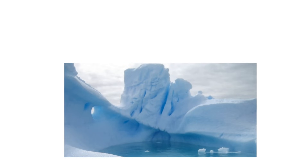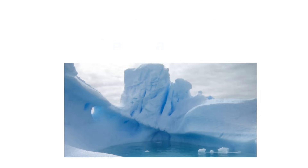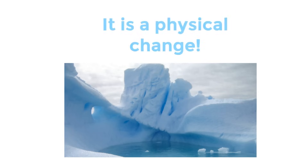The last example is ice changing — melting into water. What kind of change is that? Ice is the frozen version of water, so it's still the same type of matter. When ice melts, that is still considered a physical change. Even though the state of the matter has changed from solid to liquid, it's still a physical change because it's the same type of matter.